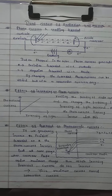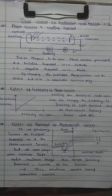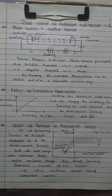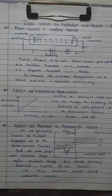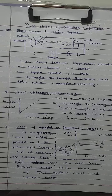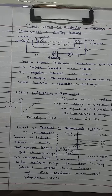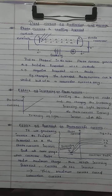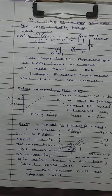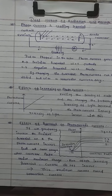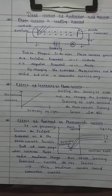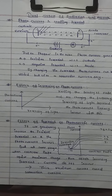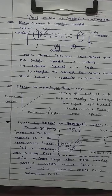Hello friends, welcome to PCM Corner YouTube channel. In this video we are going to cover dual nature of radiation and matter part 2. In the previous video we discussed the basics of dual nature of radiation, Einstein's equation for maximum kinetic energy, energy of photon in terms of wavelength and frequency, and momentum.